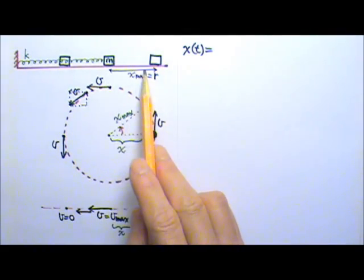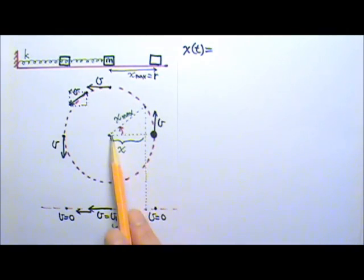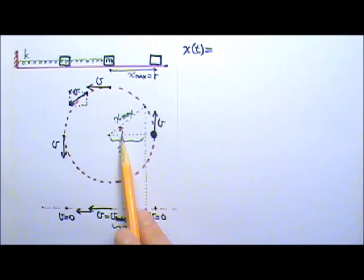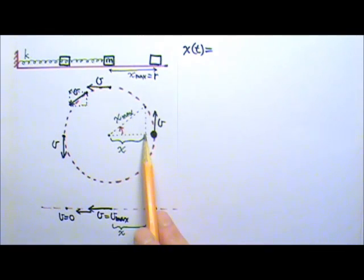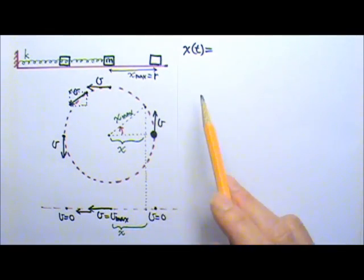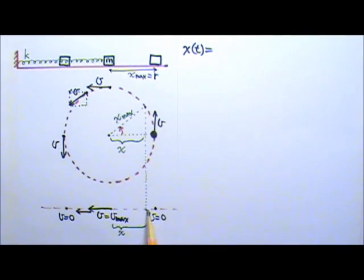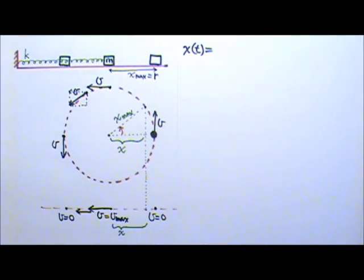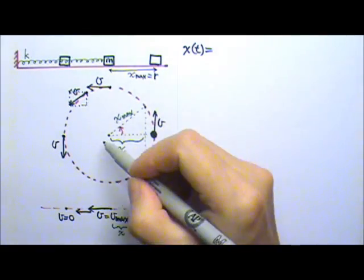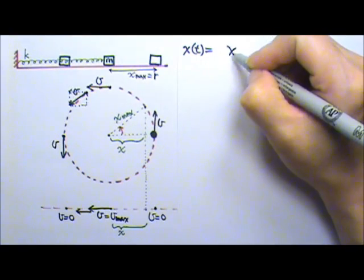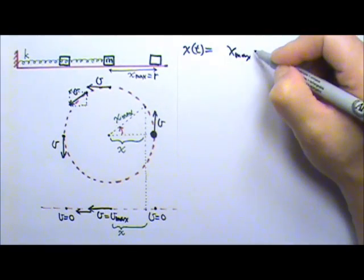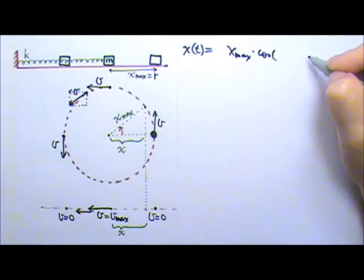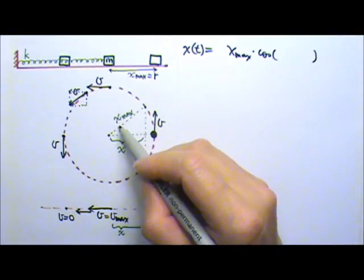The position x at this moment is this one here. And if this is an angle right here, angle theta, then this x here is the adjacent side. That means if we want to find the position at this moment x, it will be the hypotenuse times cosine of that angle. So the hypotenuse — amplitude — times cosine of the angle over here.